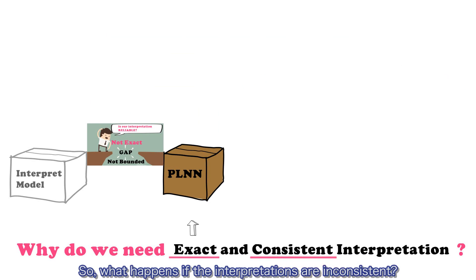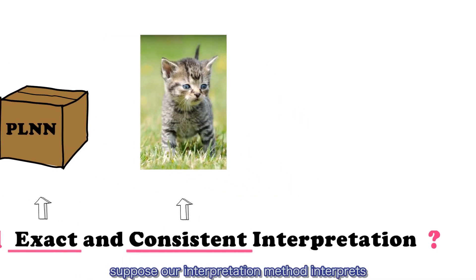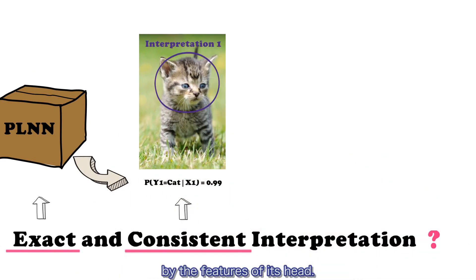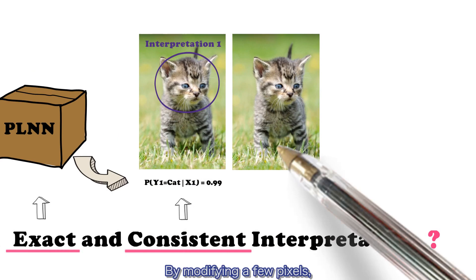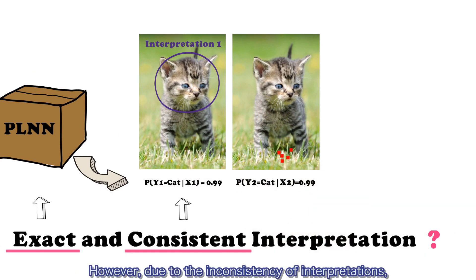So, what happens if the interpretations are inconsistent? Given the image of a cat, suppose our interpretation method interprets the classification result of this cat by the features of its head. By modifying a few pixels, we can easily generate a similar cat in the neighborhood of the original cat.